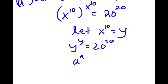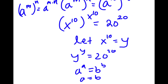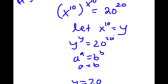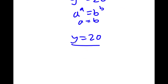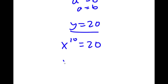So now I have y to the power of y is equal to 20 to the power of 20. And since a to the power of a equals b to the power of b implies a equals b, y is equal to 20. Now, remember how we let x to the power of 10 equal to y, meaning x to the power of 10 is equal to 20, and x is equal to the 10th root of 20.